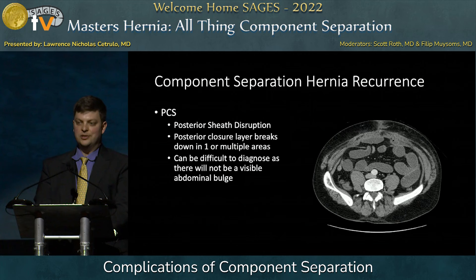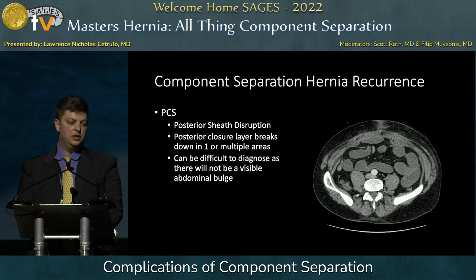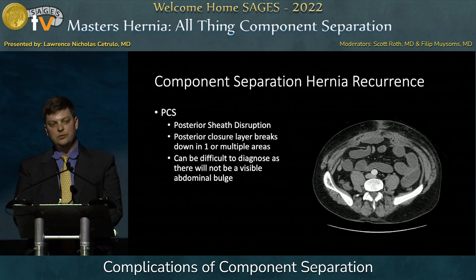For posterior component separation-specific complications: when I think of anterior component separation, my mind goes to wound complications; with posterior, I think about long-term recurrence or the dreaded posterior sheath disruption. This is one of my patients — you can see bowel above and bowel below a line of disruption. You never want to see a complete breakdown of your posterior component on post-op day five, leading to a bowel obstruction. I use uncoated mesh in these patients, so as soon as bowel sits in that space, it sticks to your mesh and you're going to have a bowel obstruction.